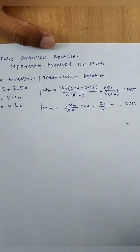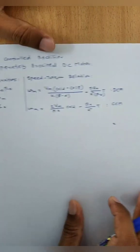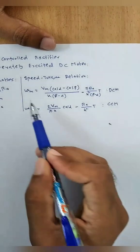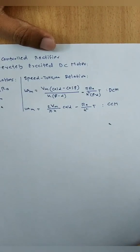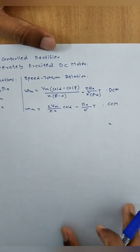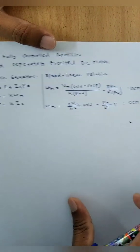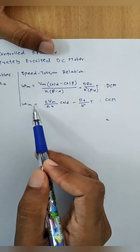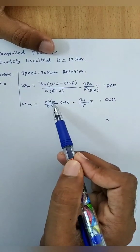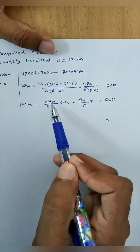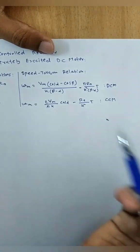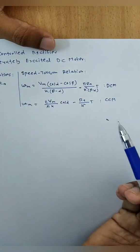Welcome. In this lecture we continue the analysis of a single-phase fully controlled rectifier fed separately excited DC motor. In the last lecture we derived the speed-torque relation under DCM and CCM operation. These are the basic equations of the separately excited DC motor. The speed-torque curve depends upon the maximum value of single-phase supply V_M and the firing angle alpha of the rectifier.